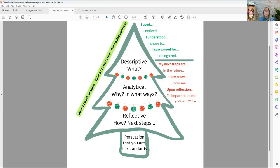You're going to use phrases. The green phrases here really go to analytical and the red phrases go to reflective. Analytical phrases might be 'I used, I noticed, I understood, I chose to, I saw a need for, I recognized.' It's okay to say 'I'—'I' is actually good in this process. Give yourself credit. In the reflective: 'my next steps are, in the future I will, I now know, I now see, upon reflection I will, to impact students greater I will.' This is about you and the work you are doing. This is not about the work outside of you until you talk about your collaboration: 'I collaborated with, I advocated for, I led a group of teachers, I saw a need in the wider community and I met that need by...' Give the specific...